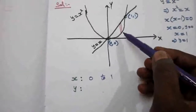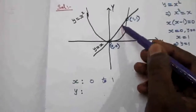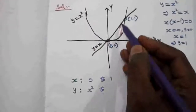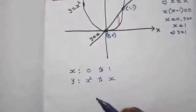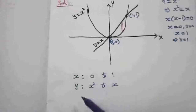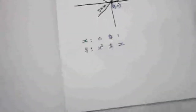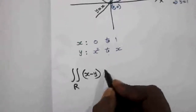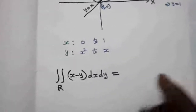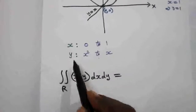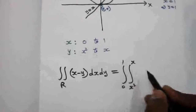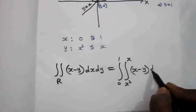y is a variable limit. The strip starts from the parabola and ends at the straight line. From the parabola, y equal to x square is the lower limit; from the straight line, y equal to x is the upper limit. So the integral becomes double integral, x from 0 to 1, y from x square to x, of (x minus y) dy dx. Since y is the variable limit, the first integration is with respect to y.